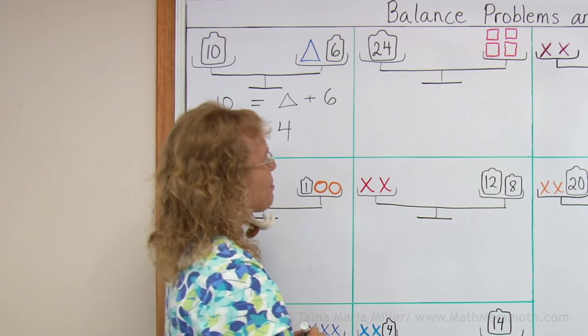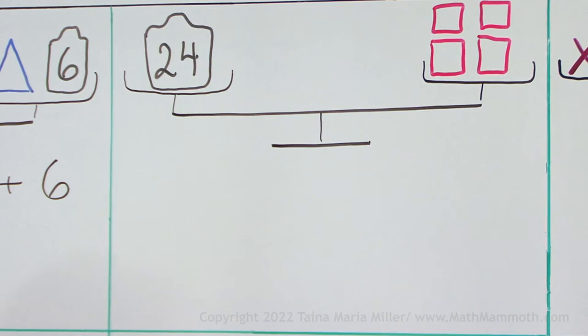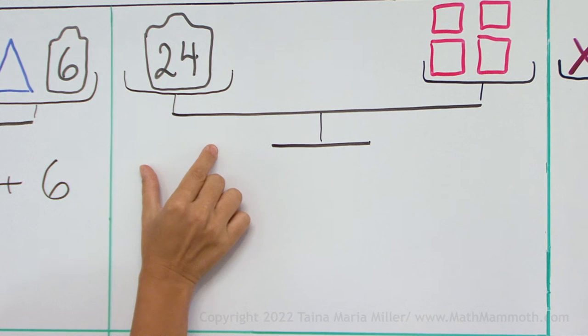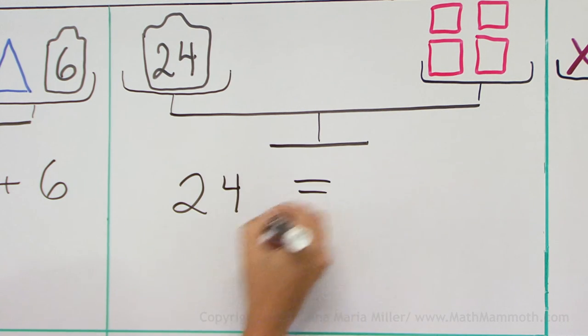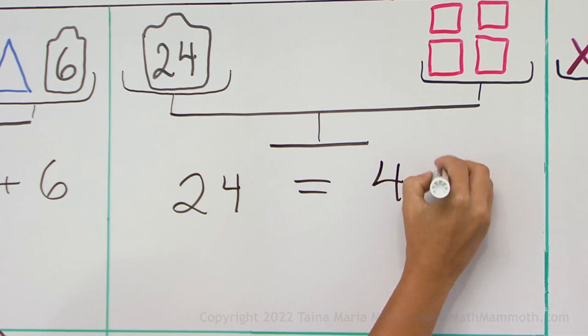Let's take another. This one is easy too. There's 24 kilograms here on this side, on this side 4 squares. So my equation that I can write is 24 equals 4 squares.